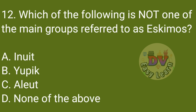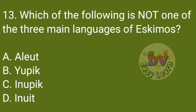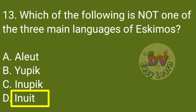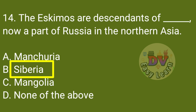Q12: Which of the following is not one of the main groups referred to as Eskimos? Q13: Which of the following is not one of the three main languages of Eskimos? Correct option: Inuit. Q14: The Eskimos are descendants of people from Siberia, now a part of Russia in Northern Asia. Correct answer: Siberia.